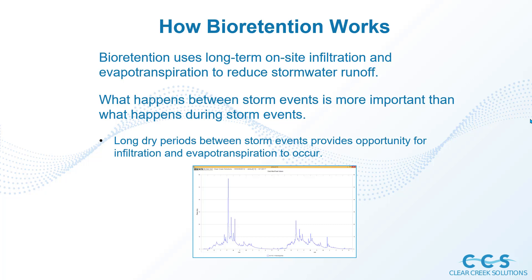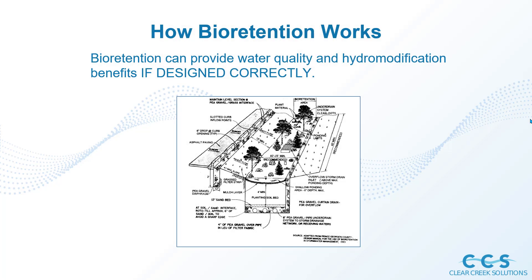Bioretention uses long-term on-site infiltration and evapotranspiration to reduce stormwater runoff. What happens between stormwater events is where the magic happens — over a long period of time it either treats the water, allows it to evapotranspirate into the atmosphere, or infiltrates it. It's not primarily a short-term fix for large storm events, though it can mitigate flow. Bioretention can provide really good water quality and hydrological modification if designed correctly. A recent study confirmed that WWHM 2012 bioretention facility modeling does a great job of modeling real-world scenarios — but only if it was designed and built correctly in the field.